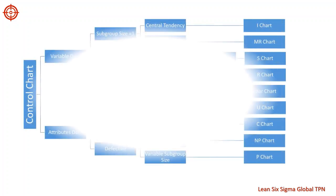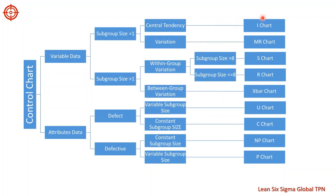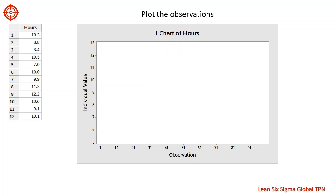The individual chart, also called an I and MR chart, monitors the process mean by plotting individual observations on a time series plot. Let's create an individual chart for the completion times. The first real estate contract took 10.3 hours to complete, and this is the first point plotted on the chart. The second contract took 8.8 hours, and we add the remaining observations and then connect the points.